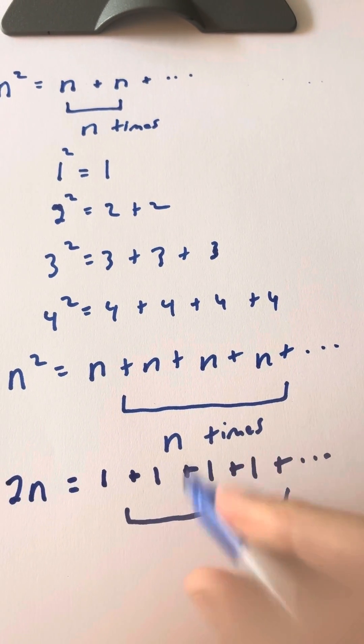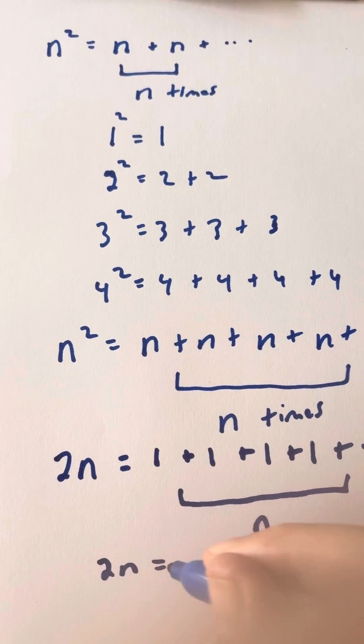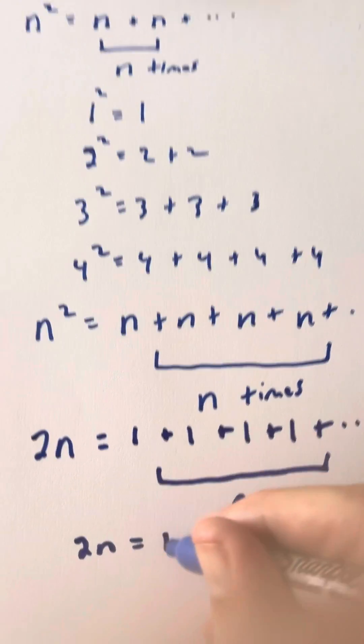But keep in mind that there's a total of n of these, because we're doing this n times. So now we have that 2n is equal to 1 plus 1 plus 1 n times, which is just going to be n.